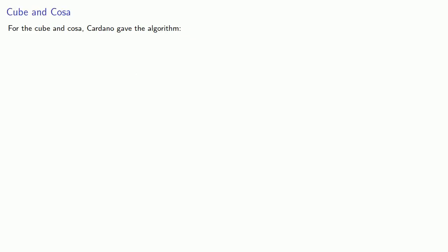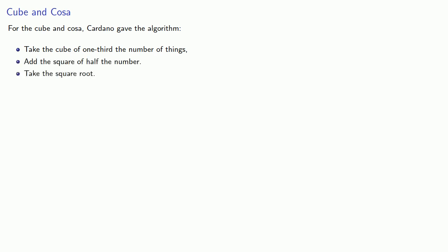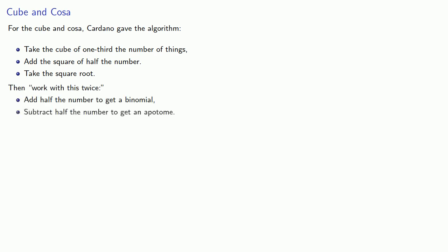For the cube and cosa — the equation that started it all — Cardano gave the algorithm: take the cube of one-third the number of things (that's our x coefficient), add the square of half the number, take the square root, then work with this twice. Add half the number to get a binomial, and subtract half the number to get an apotome. The cube root of the binomial minus the cube root of the apotome gives the solution.